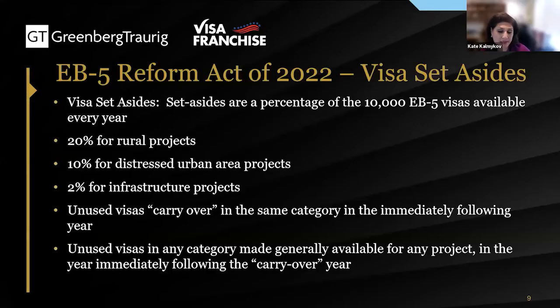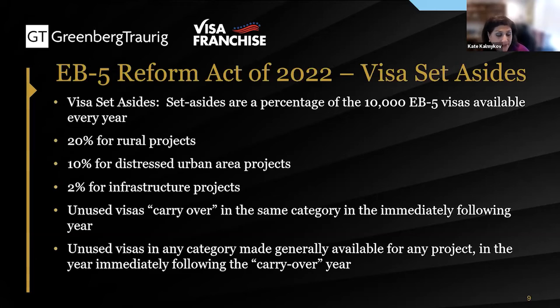Rural areas will be counted the same as they were before. Both rural areas and TEAs are going to be prioritized for processing under the new law. The new law introduced a concept of visa set-asides: 20% of EB-5 immigrant visas will be set aside for rural projects, 10% for distressed urban areas, and 2% for infrastructure. If these numbers aren't used up, they carry over to the next year, and in the third year they'll be available to everybody.